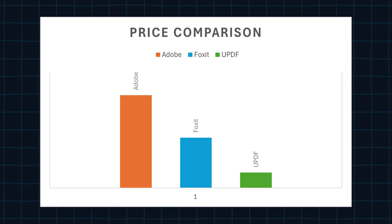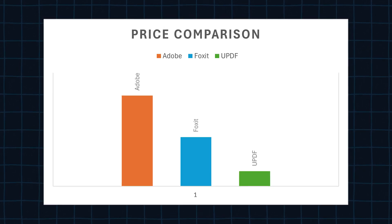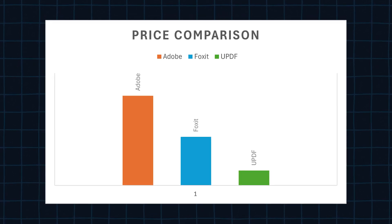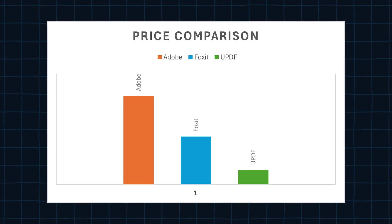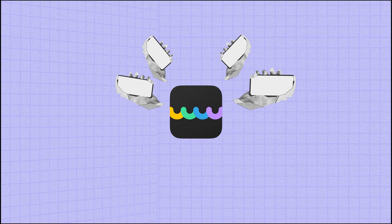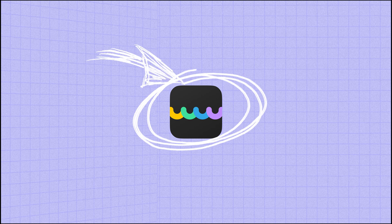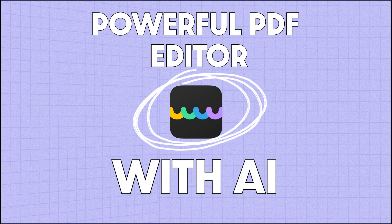When it comes to pricing, Foxit costs around $9,230 per year and doesn't offer a lifetime plan. In comparison, UPDF costs just one-fifth of Foxit, making it a much more affordable option. Additionally, UPDF offers a single license for seamless use across all platforms, allowing you to use it on up to 4 devices — a convenient and cost-effective choice for anyone needing a powerful PDF editor with AI capabilities.